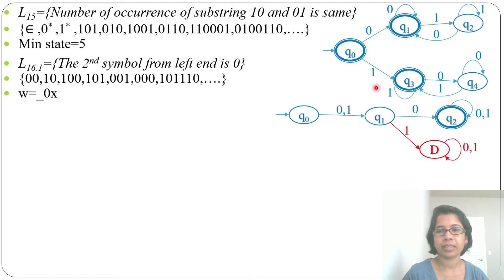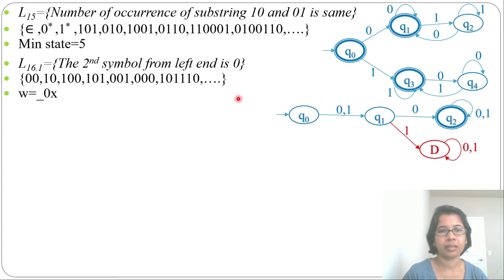Now this is the DFA that accepts every string whose second symbol from the left is 0. We can verify: '00' — accepted; '001', '10', '100', '110', '101', '0000', '1011', '110' — all accepted because the second symbol in each is 0. So the DFA is correct.